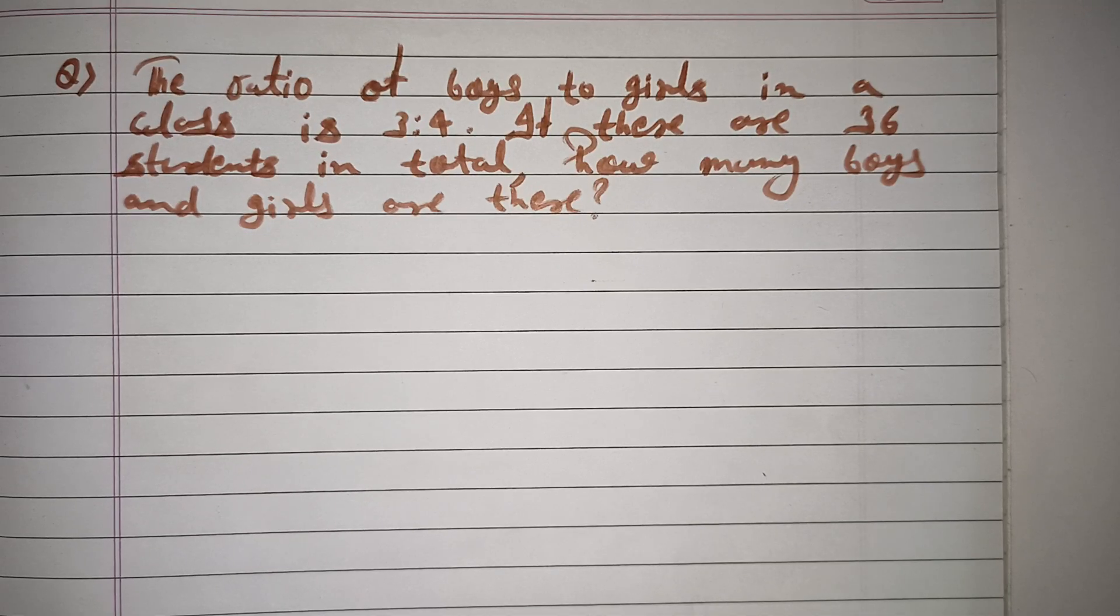Hello dear students, in today's video we will discuss a question. The ratio of boys to girls in a class is 3 to 4. If there are 36 students in total, how many boys and girls are there?